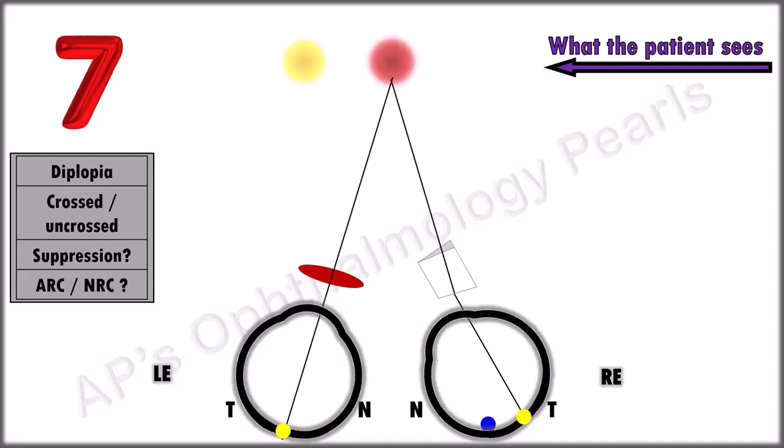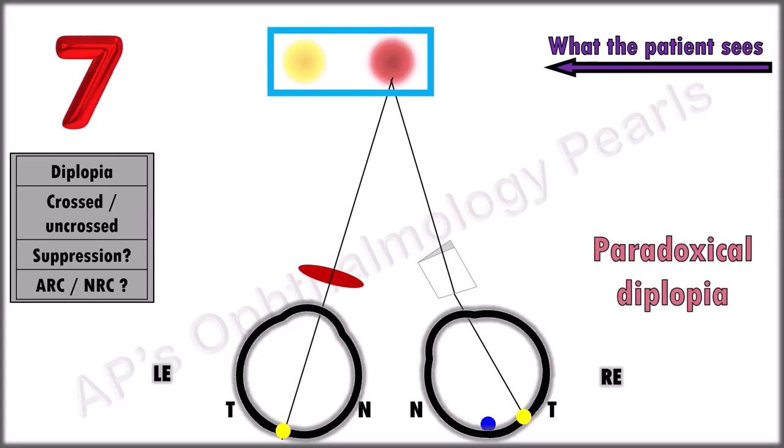Diplopia? Yes. What type of diplopia? Crossed. Suppression? No. In the presence of an esotropia, instead of an uncrossed diplopia, we are seeing a crossed diplopia. This is called paradoxical diplopia and indicates the presence of an ARC.